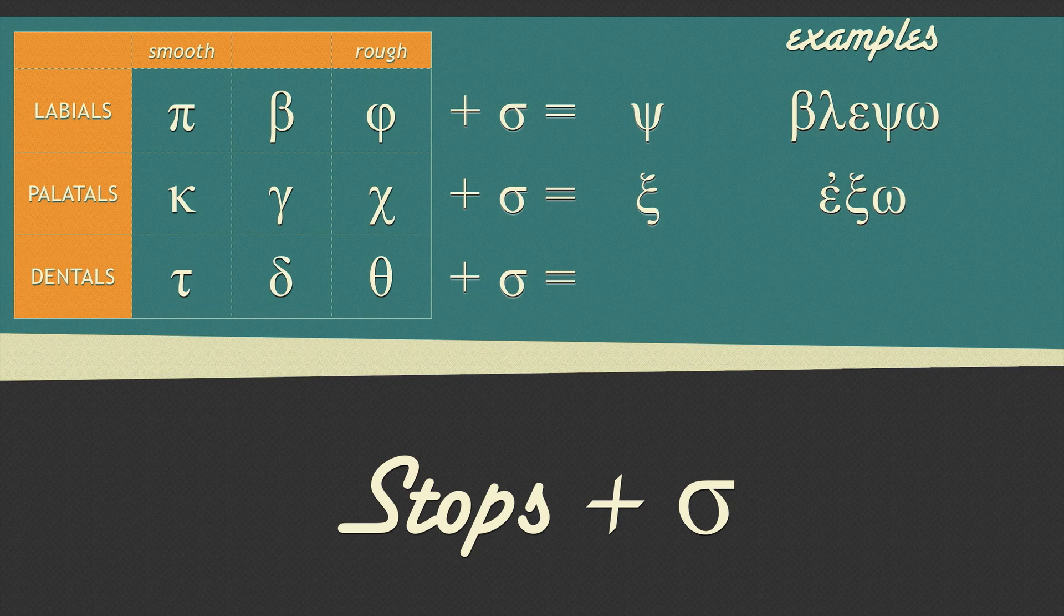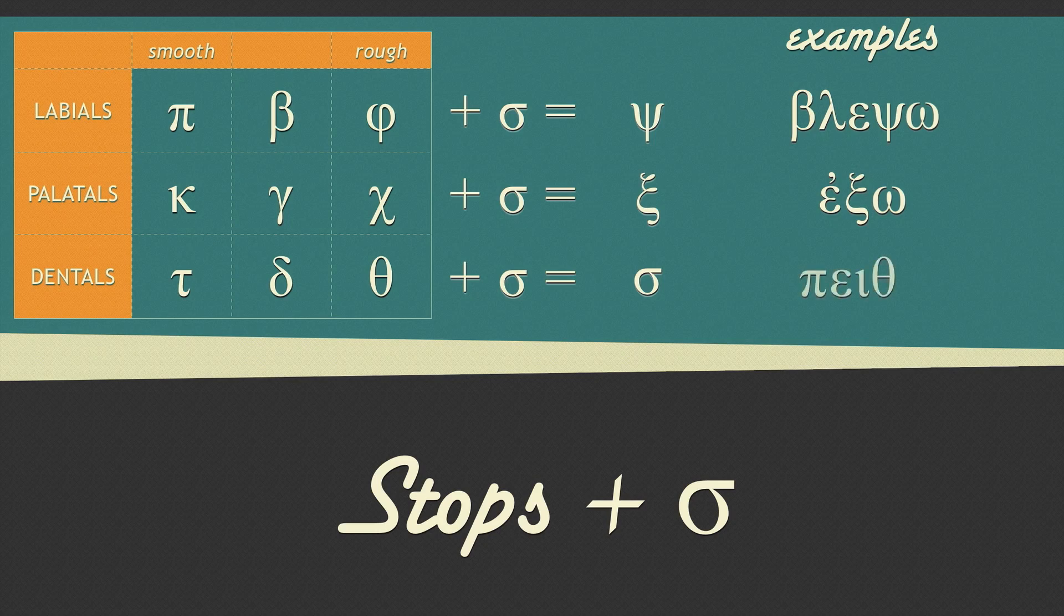When we get to dentals, the sigma is at its most sinister. If a word ends in a dental and a sigma is added, the dental disappears entirely. The dental gets its teeth knocked right out. Here's an example. The word stem ends in a dental and when an ending with a sigma is added, the dental plus sigma equals just a sigma.